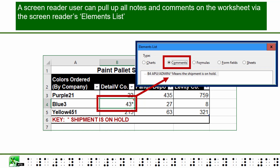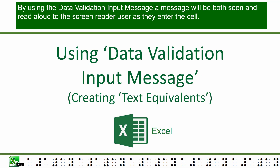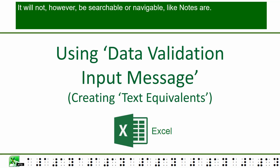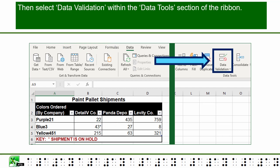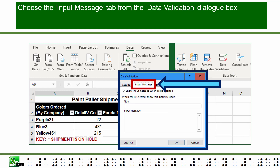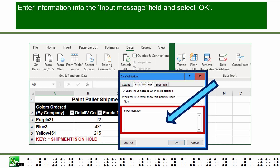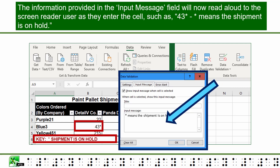A screen reader user can pull up all notes and comments on the worksheet via the screen reader's elements list. By using the data validation input message, a message will be both seen and read aloud to the screen reader user as they enter the cell. It will not, however, be searchable or navigable like notes are. To apply data validation, focus on the cell in which a text equivalent is needed for a visual element, such as the asterisk we have been discussing. Select the Data tab, then select Data Validation within the Data Tools section of the ribbon. Choose the Input Message tab from the Data Validation dialog box, enter information into the input message field, and select OK. The information will now read aloud to the screen reader user as they enter the cell — for example, "43 asterisks dash — asterisk means that shipment is on hold."